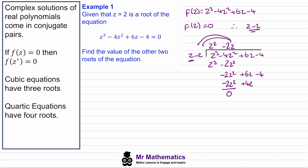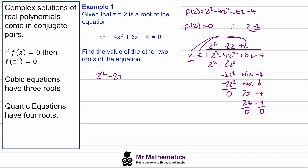The z squared terms cancel, and six z minus four z gives us two z. Dividing by z gives positive two. Dropping down the constant negative four and multiplying out gives two z minus four. So our quadratic factor is z squared minus two z plus two, and this equals zero.